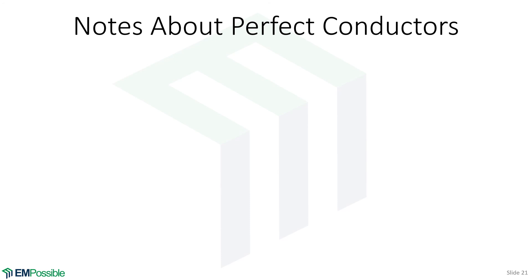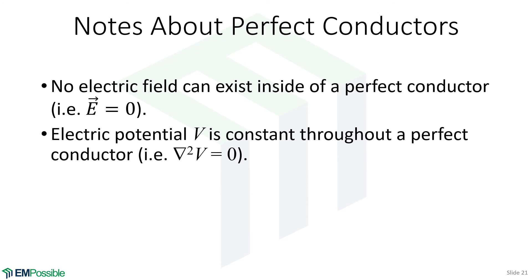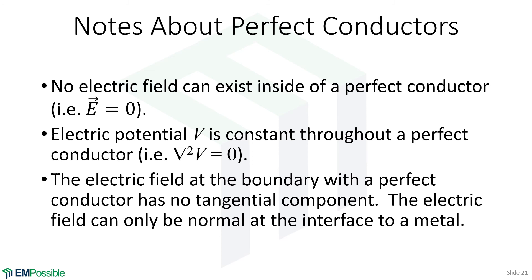Some final notes on perfect conductors: no electric field can exist inside a perfect conductor — E is zero throughout. If E is zero, the electric potential cannot vary; it is constant throughout the conductor, though it need not be zero. Finally, when an electric field terminates onto a perfect electric conductor, it terminates perfectly perpendicular to the interface, because the tangential component must be zero to satisfy the boundary condition that tangential E is the same on both sides.